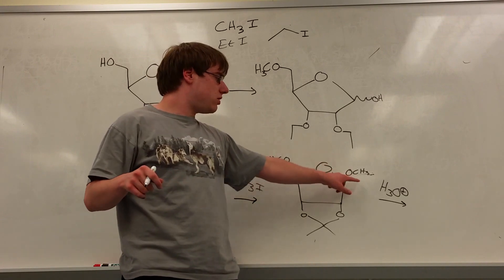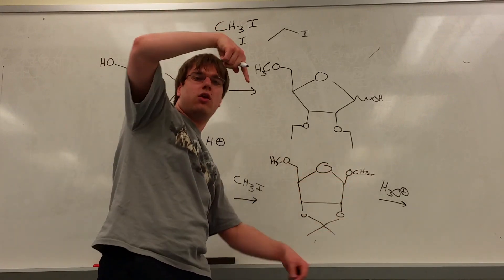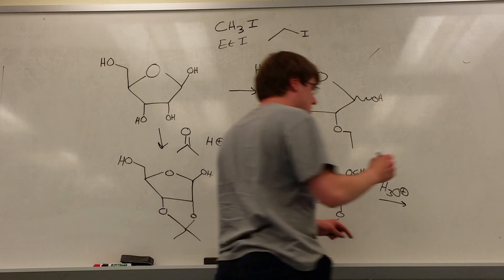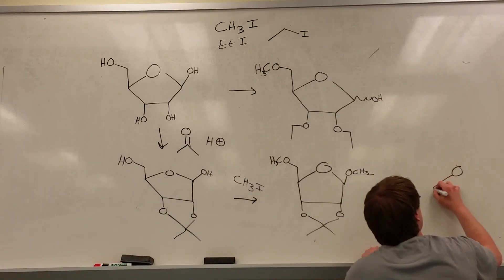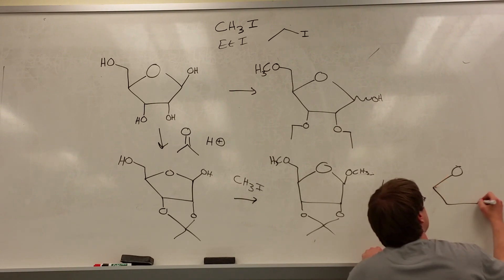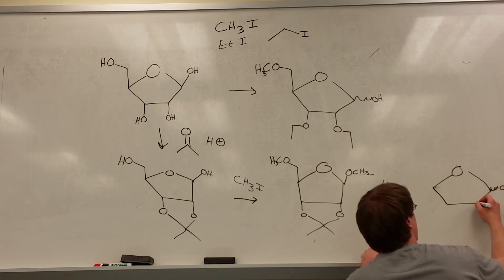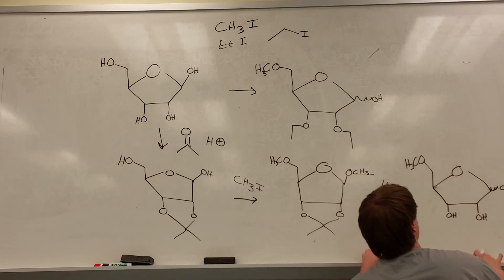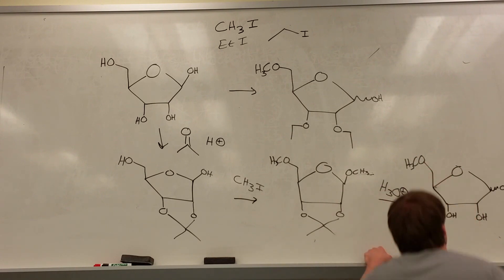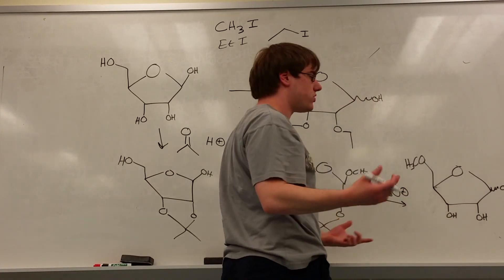Because that OH can come in from the front or the back. And so now you have your five-membered ring, you have the squiggly line OH, you have two downward-pointing OHs on the bottom, and the OCH3 that we added in that last step. And again, H3O positive can't remove that. So it's stuck being OCH3 for the rest of the synthesis.